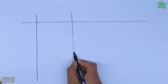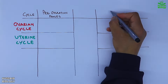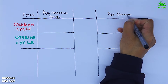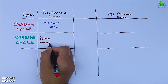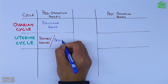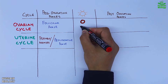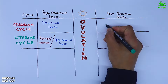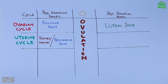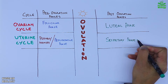In this table, the cycles are shown on the left, displaying pre-ovulatory and post-ovulatory phases. In the ovarian cycle, the follicular phase corresponds to the periods and proliferative phases in the uterine cycle. After that, the ovulation event is followed by the luteal phase in the ovaries and the secretory phase in the uterus.